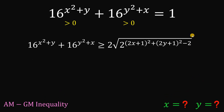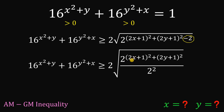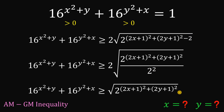Now let's focus on this result. Focusing on the negative 2, using laws of exponents, we can rewrite the expression inside the radical sign as 2 raised to the power of (2x+1) squared plus (2y+1) squared, all over 2 raised to the second power — this represents the negative 2. This is a perfect square, so we can pull out one half outside the square root, giving us 2 over 2, which simply equals 1.